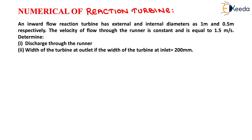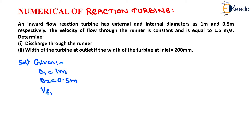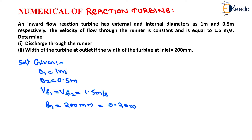First, we write the given quantities: external diameter D1 equals 1 meter, internal diameter D2 equals 0.5 meter. Velocity of flow at inlet and outlet: Vf1 equals Vf2 equals 1.5 meter per second. Width of turbine at inlet B1 equals 200 mm, which we convert to 0.20 meter. Let the width at outlet be B2.